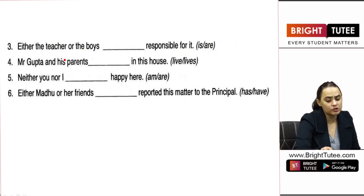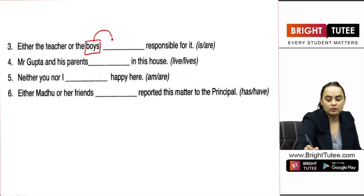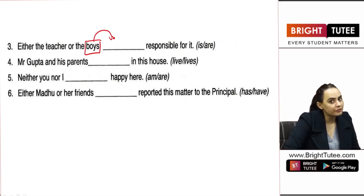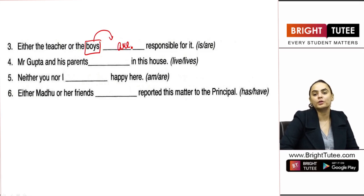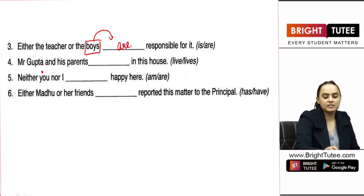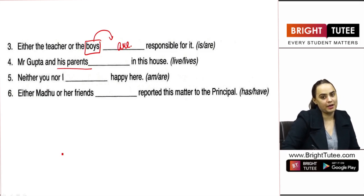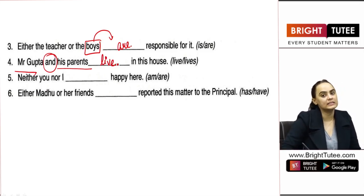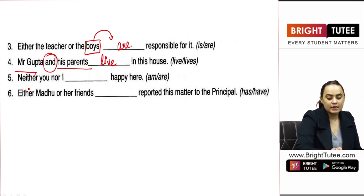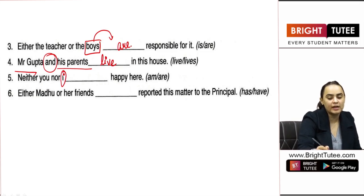Either the teacher or the boys — the noun which is closest to the verb is plural, since it is plural, therefore my verb will be plural. 'Mr. Gupta and his parents' — 'and' is used to join two nouns, therefore this is plural, so 'live in this house.'